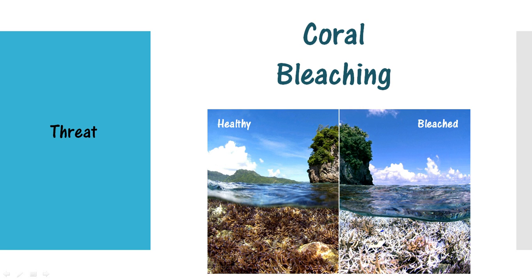Coral bleaching is one of the biggest threats to this species today. Coral reefs are vulnerable to damage mainly because they grow very slowly and are sensitive to temperature and salinity variations. When a reef becomes stressed, it expels the zooxanthellae, then loses its color and food supply, and ultimately dies.